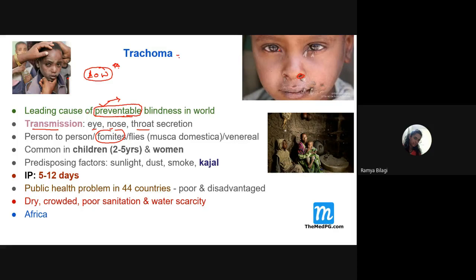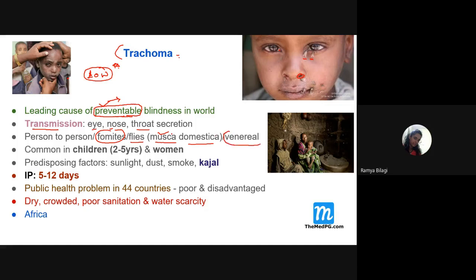Trachoma can also be spread by fomites — for example, by using an infected handkerchief. It can also be spread by domestic flies (Musca domestica), and occasionally by the venereal route. It is very common in children between 2 to 5 years of age (if that option is not given, 'less than 10 years' is also correct). Elder women in close contact with children can also get infected.